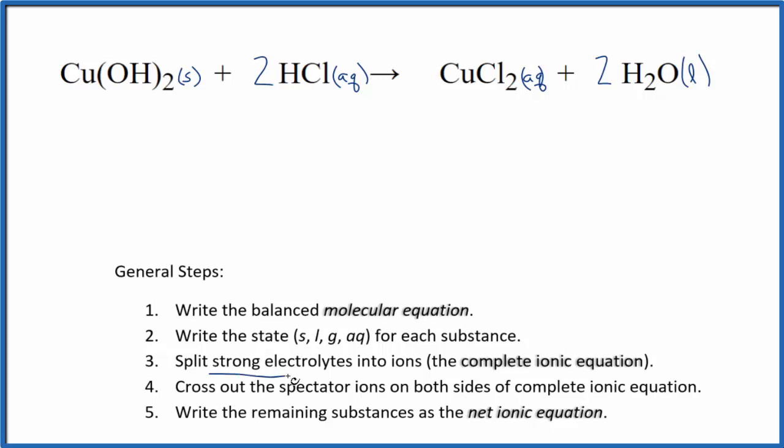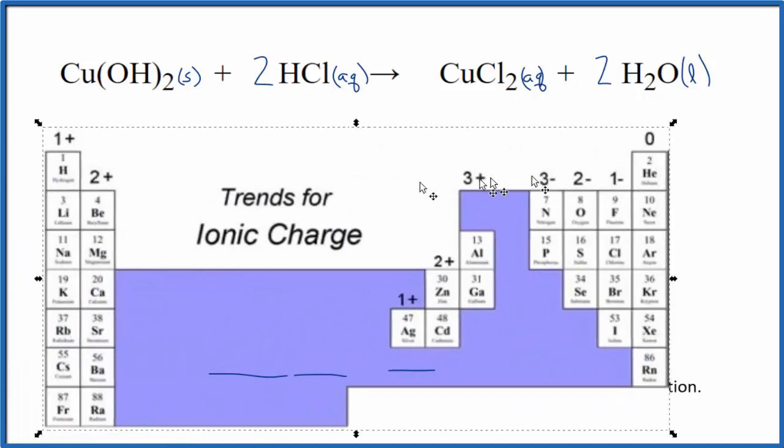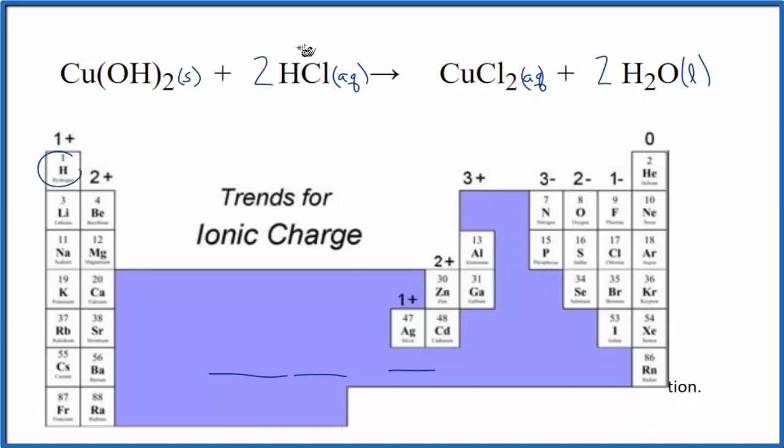Next, we're going to split the strong electrolytes into their ions. That'll give us the complete ionic equation. We can't split this up because it's a solid. So it's going to stay together. Aqueous compounds we can, however. So if we looked on the periodic table, let's pull that in. We could see that hydrogen, that's in group one. That'll have a positive charge. Chlorine, over here, has a negative charge.